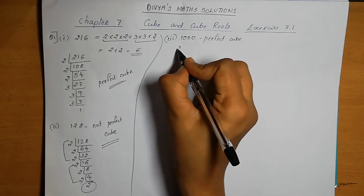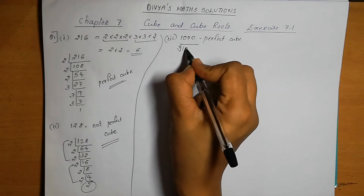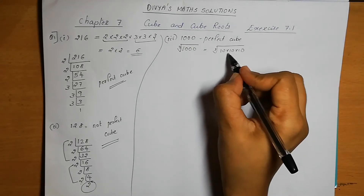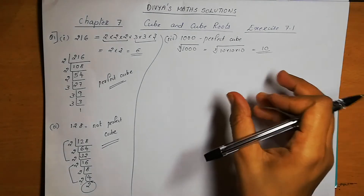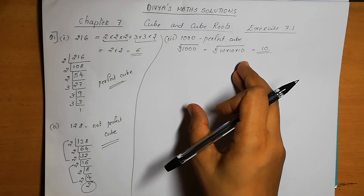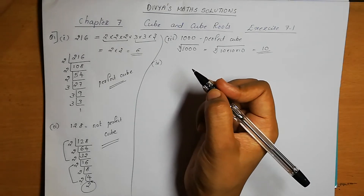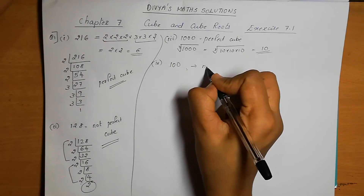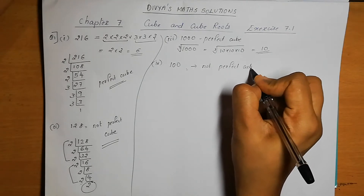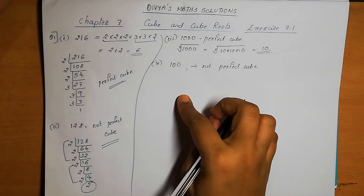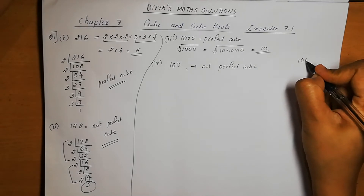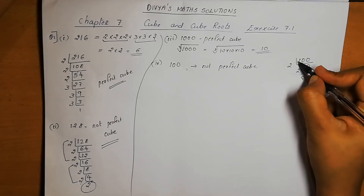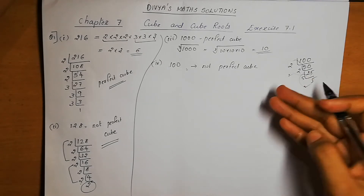The fourth number is 100. Here it is clear that there are only two zeros. If we take prime factors: 2 × 2 × 5 × 5 — one pair of 2s and one pair of 5s are each missing one element to complete a triplet. So 100 is not a perfect cube.